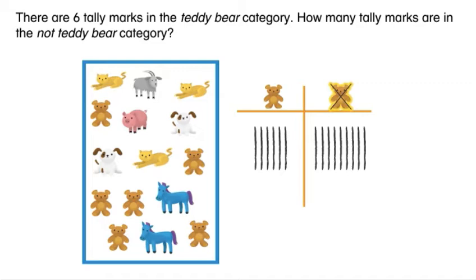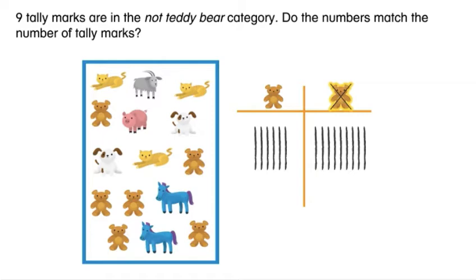How many tally marks are in the not teddy bear category? Nine tally marks are in the not teddy bear category.